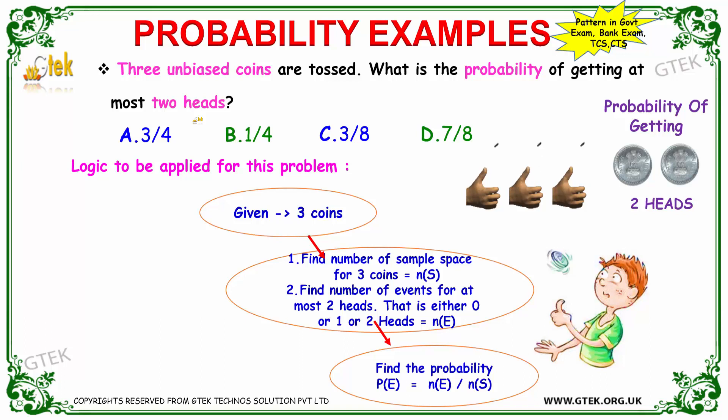The logic to be applied is: take three coins, find the number of sample space for the three coins, identify the events for at most two heads, then calculate the probability as the number of possible events divided by the number of sample space.